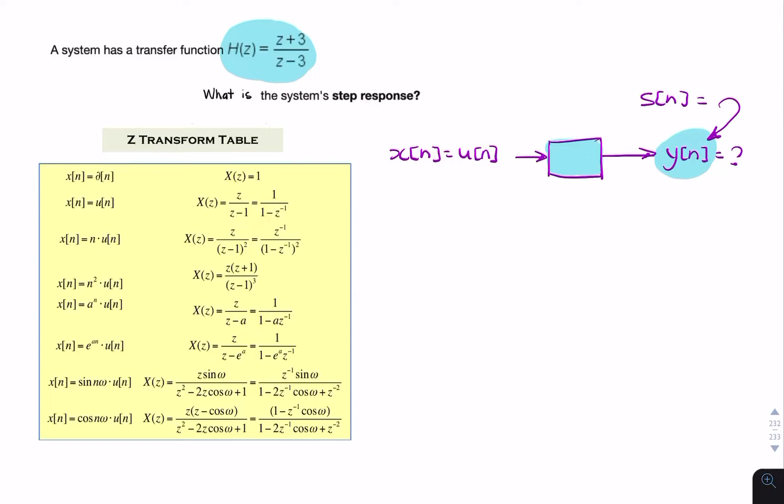Because we're given the transfer function, we can write the output in the z domain as y of z equals the transfer function multiplied by the input in the z domain.